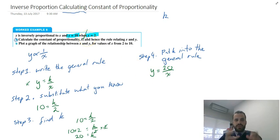So we did two things. We calculated the constant of proportionality and we found the rule relating x and y. We did it in under four minutes. That's inverse proportion and calculating the constant of proportionality.